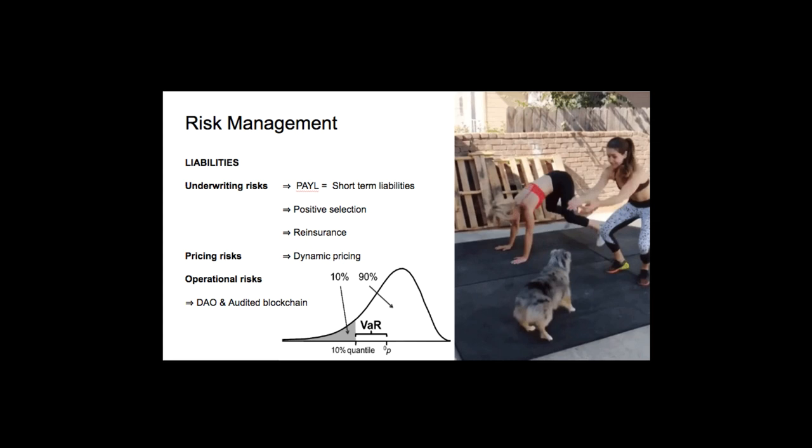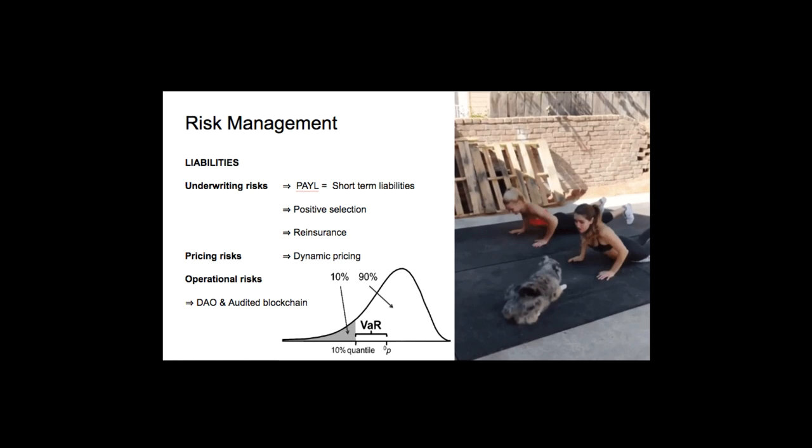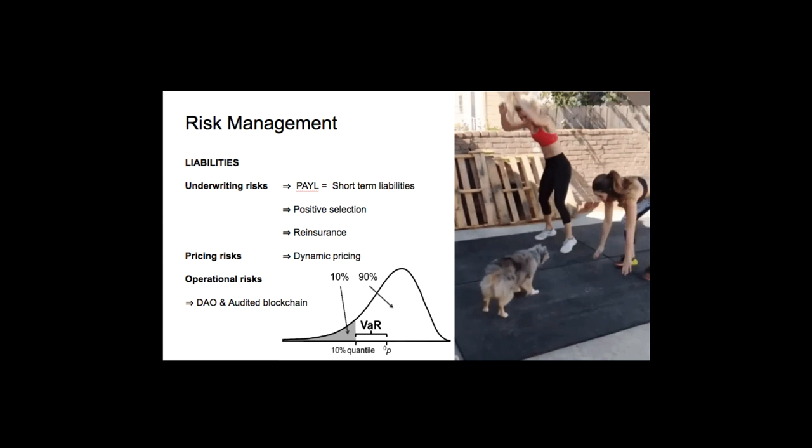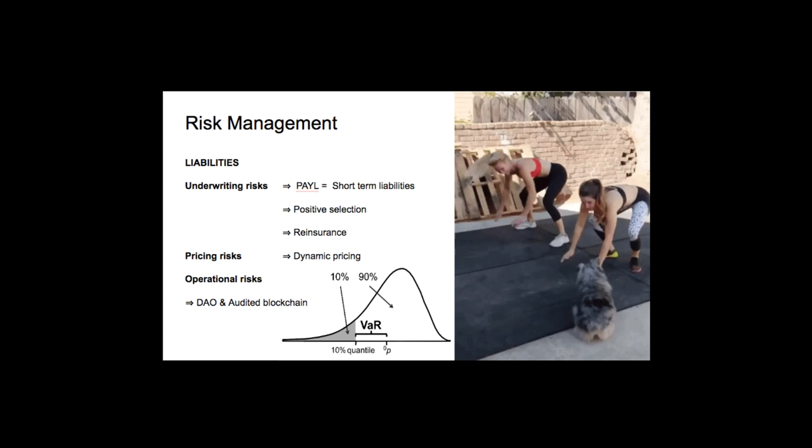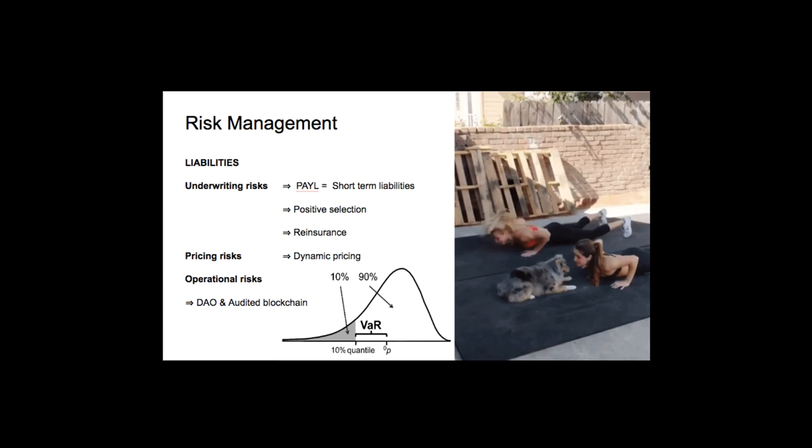First, we have underwriting risk. Phoenix protects against death, so one of the key risks is mortality. If too many of our customers die, we might struggle to pay their benefits. Two key features help us protect against this. First, our pay-as-you-live model works on a monthly subscription basis, limiting the liabilities to the next month.